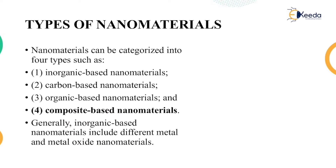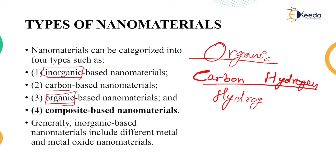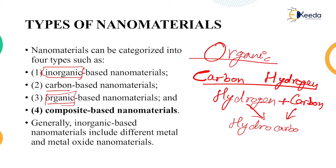Types of nanomaterials: nanomaterials can be considered as inorganic-based, carbon-based, and organic-based. Organic comes from organic chemistry, which contains two elements — carbon and hydrogen — which together form hydrocarbons. When it is only carbon, it is classified as carbon-based. Inorganic is everything else. The last type is composite-based nanomaterials, which can be a combination of these three.